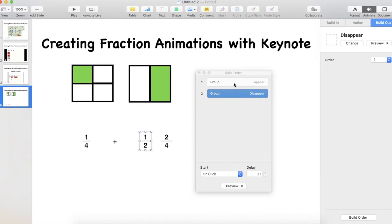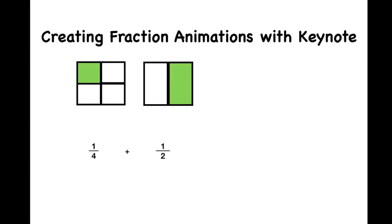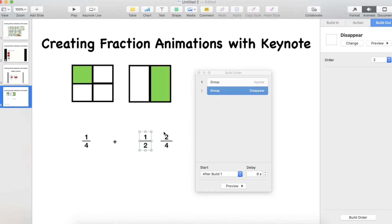Now to make them go at exactly the same time I'm going to select build order. And you can see here that these objects will happen one after the other on click. But I want these to happen together. I can drag and drop to reorder. Let's test this one out. So when I play my slideshow, I select and one appears the other one disappears. So I've got to move the two quarters back over to the top of one half.